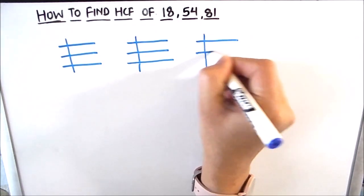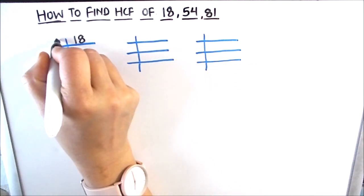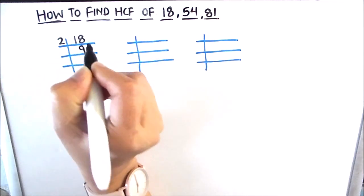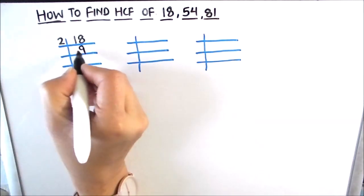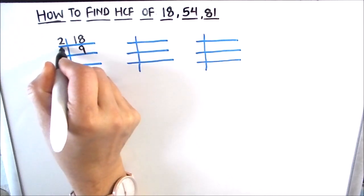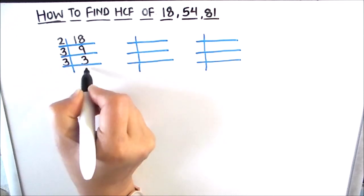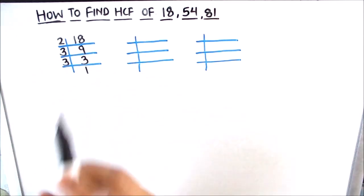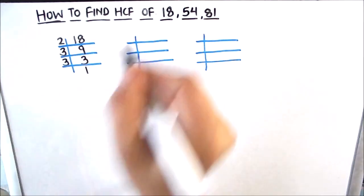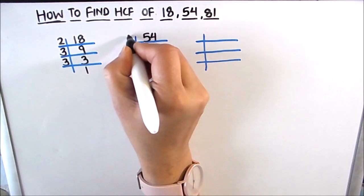Let's find the factors of 18. It is an even number, so it is fully divisible by 2. 2 times 9 is 18. 9 is an odd number, not divisible by 2, so let's try the next prime number, 3. 3 times 3 is 9, and 3 times 1 is 3. So the factors of 18 are 2, 3, 3, and 1.